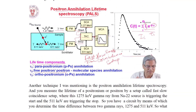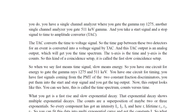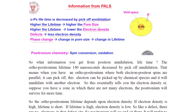Positron annihilation lifetime spectroscopy uses a positron source, SCA, TAC, SCA, and MCA. The time is measured in nanoseconds. Lifetime components are: para-positronium annihilation, free positron/molecular species annihilation, and ortho-positronium annihilation. Ortho-Ps lifetime is decreased by pick-off annihilation. Higher lifetime means higher pore size; higher lifetime means lower electron density. Defects give less electron density; phase change is a change in pore size, which is a change in lifetime.